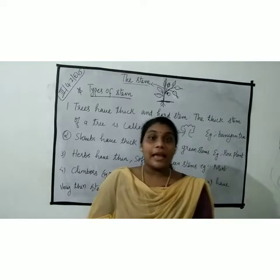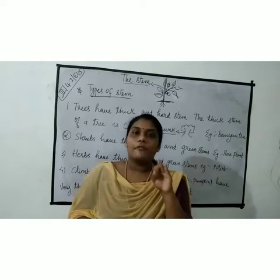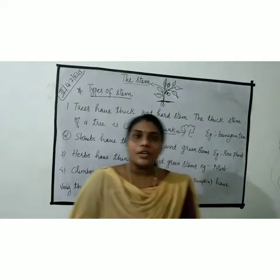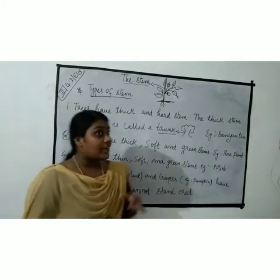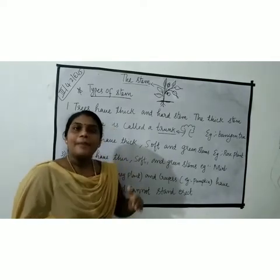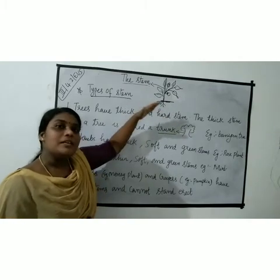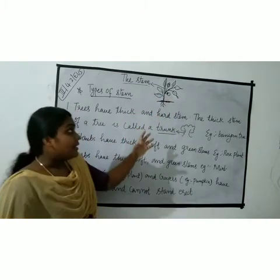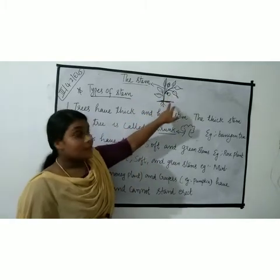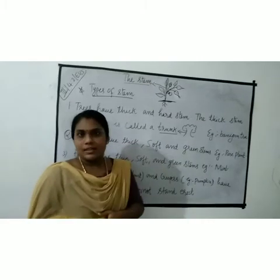We already discussed about the shoot system. Shoot system consists of leaves, flowers, fruits, buds and seeds. Now we are going to discuss about the stem. Stem grows above the soil and is the main part of a plant. The stem holds branches, flowers, fruits, and leaves.